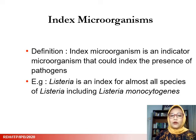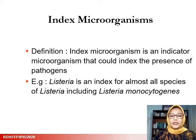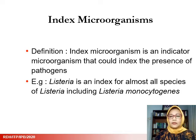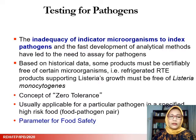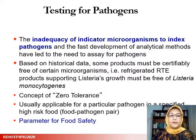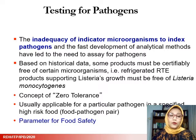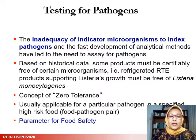An index microorganism is an indicator microorganism that can index the presence of pathogens. A good example is Listeria — considered an index for almost all species of Listeria, including the important pathogenic bacterium Listeria monocytogenes. Testing of indicator microorganisms to index pathogens is often inadequate, and the rapid development of analytical methods has led to the need to assay for specific pathogens directly. Based on historical data, some products must be certifiably free of certain microorganisms. For example, refrigerated ready-to-eat products supporting Listeria growth must be free of Listeria monocytogenes. For pathogens, the concept of zero tolerance has been developed, applicable for a particular pathogen in a specified high-risk food.